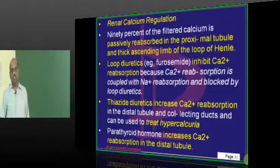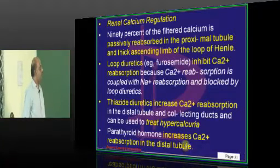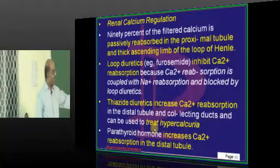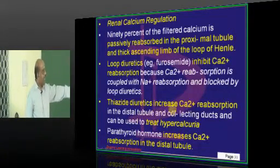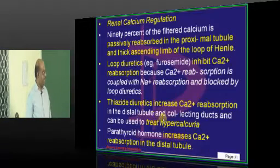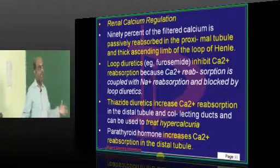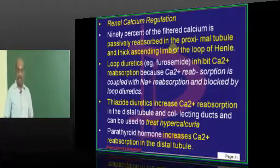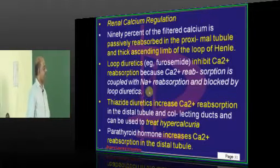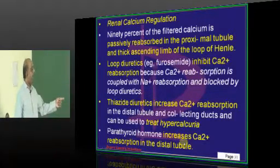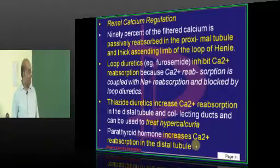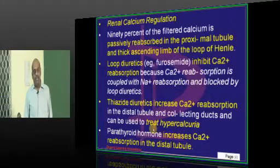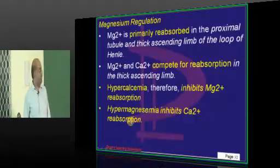Thiazide diuretics reabsorb calcium. By acting on the distal tubule and collecting ducts, they increase calcium reabsorption. Anybody who has excess calcium in the urine leading to calcium stones — to prevent hypercalciuria — we use thiazides. Parathyroid hormone increases calcium reabsorption in the distal tubule.